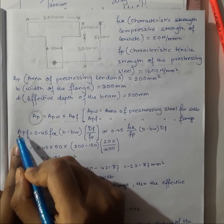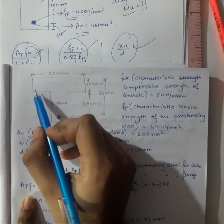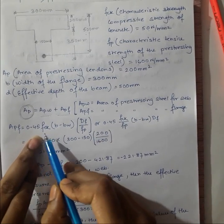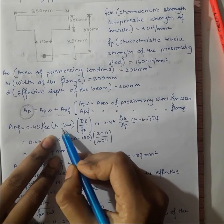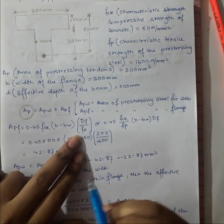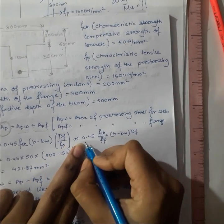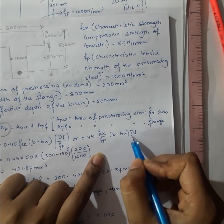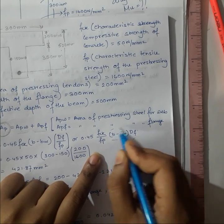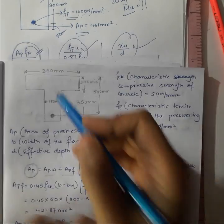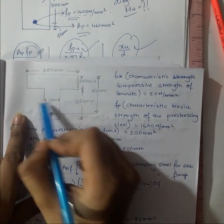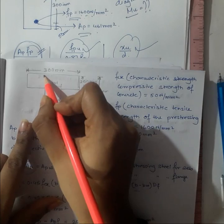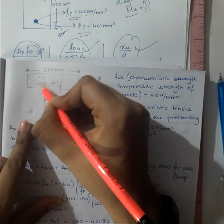The area of pre-stressing steel for the flange, Apf, is given by: 0.45 × fck × (b − bw) × df / fp, which can also be written as (0.45 × fck / fp) × (b − bw) × df. Here (b − bw) represents the overhanging flange portions on each side of the web.